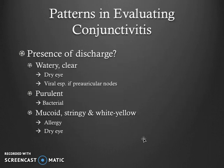When looking at conjunctivitis, or pink eye, certain patterns help us. The presence of discharge is one of those. Watery, clear discharge can lead us to a viral etiology or simple dry eye. Purulent discharge, on the other hand, points more in the direction of a bacterial process. Allergic conjunctivitis has a different type of discharge — mucoid, stringy, white or yellow.